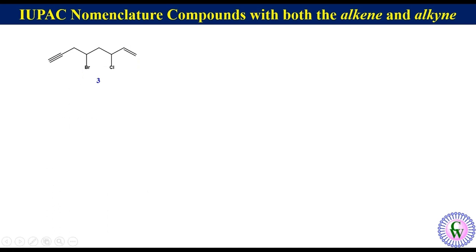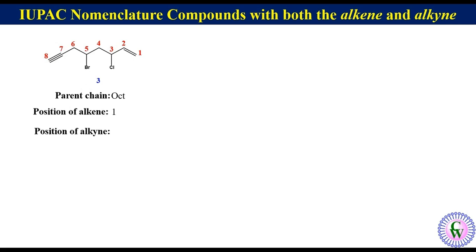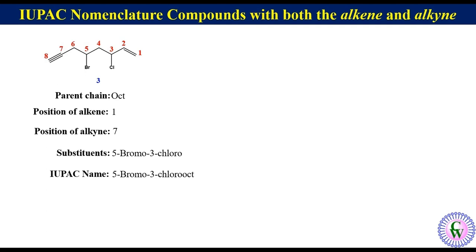Compound 3: the parent chain is an 8-carbon chain, so it will be called oct. Like the previous molecule, it also has the same position for the alkene and alkyne, so numbering starts from the alkene side as 1, 2, 3, 4, 5, 6, 7, and 8. Position of alkene is 1 and position of alkyne is 7. There are two substituents: a bromo at C5 and a chloro at C3, written as 5-bromo-3-chloro. Thus the IUPAC name is 5-bromo-3-chloro-oct-1-ene-7-yne.